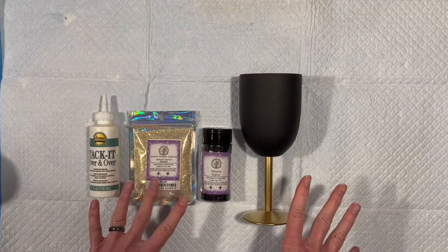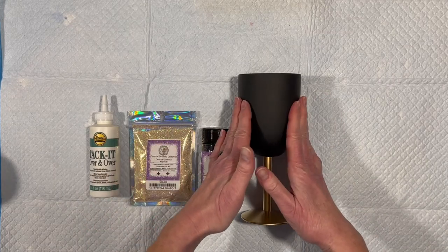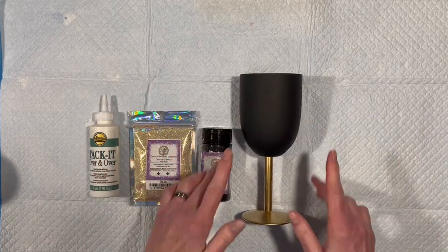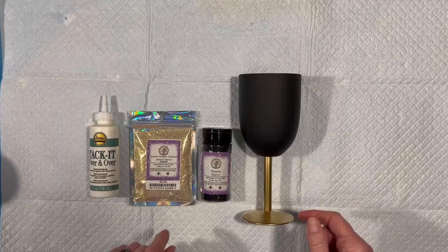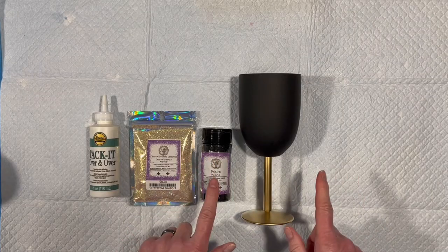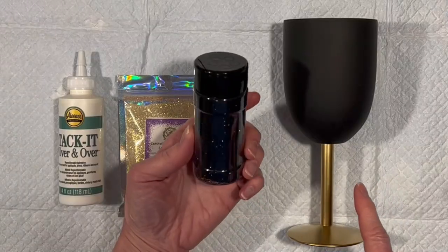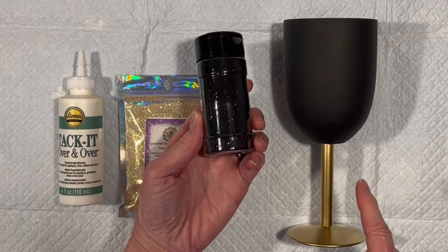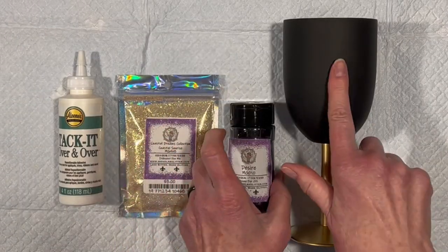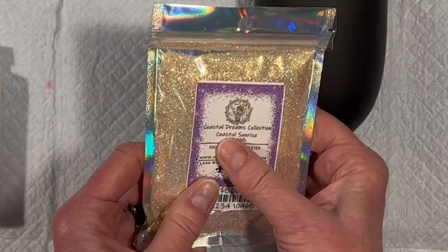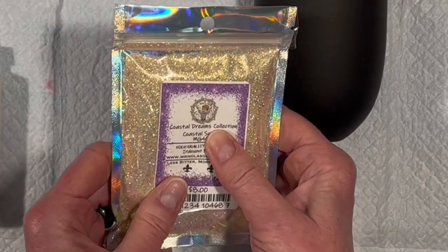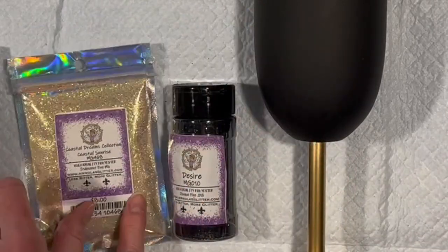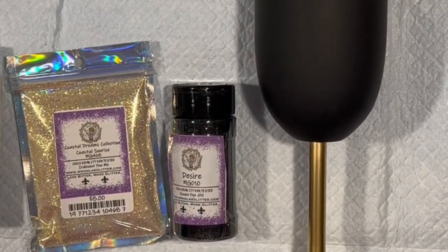I am going to start by doing the tacket method. I have already taken my wine glass and spray painted it black on top and metallic gold on the bottom. I am going to use the tacket method to apply a gorgeous black glitter from Mr. Nola's Glitter called Desire. That goes on the top. And Coastal Sunrise from the Mr. Nola's Glitter's Coastal Dreams Collection is a gorgeous gold that's going to go on the bottom.